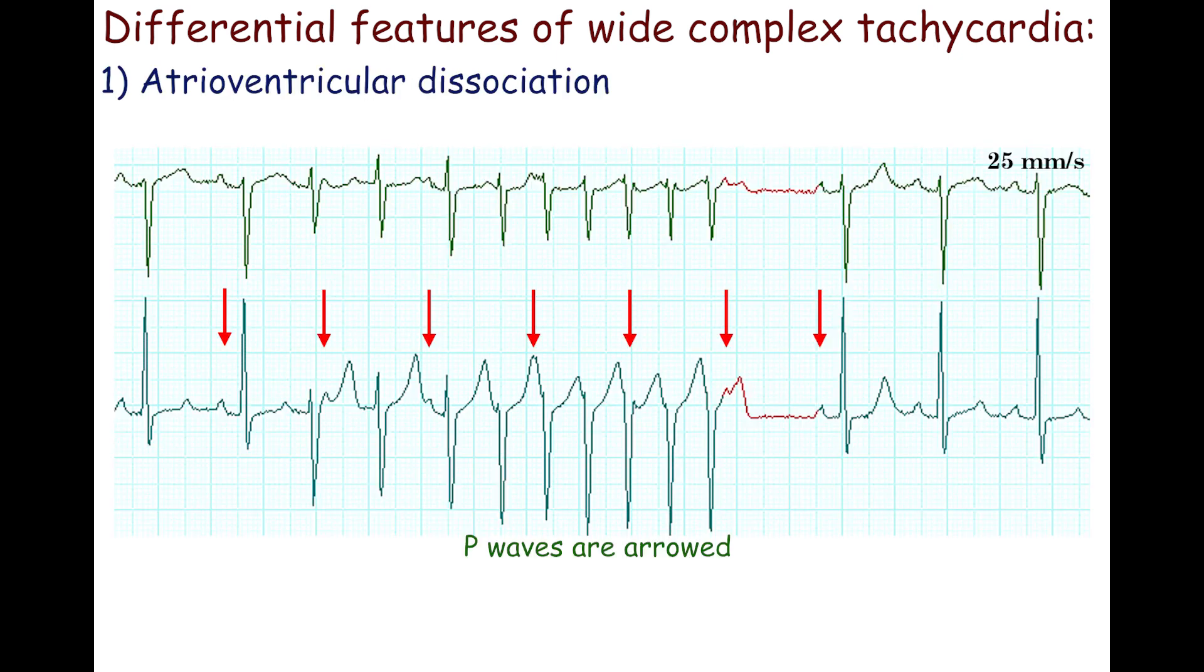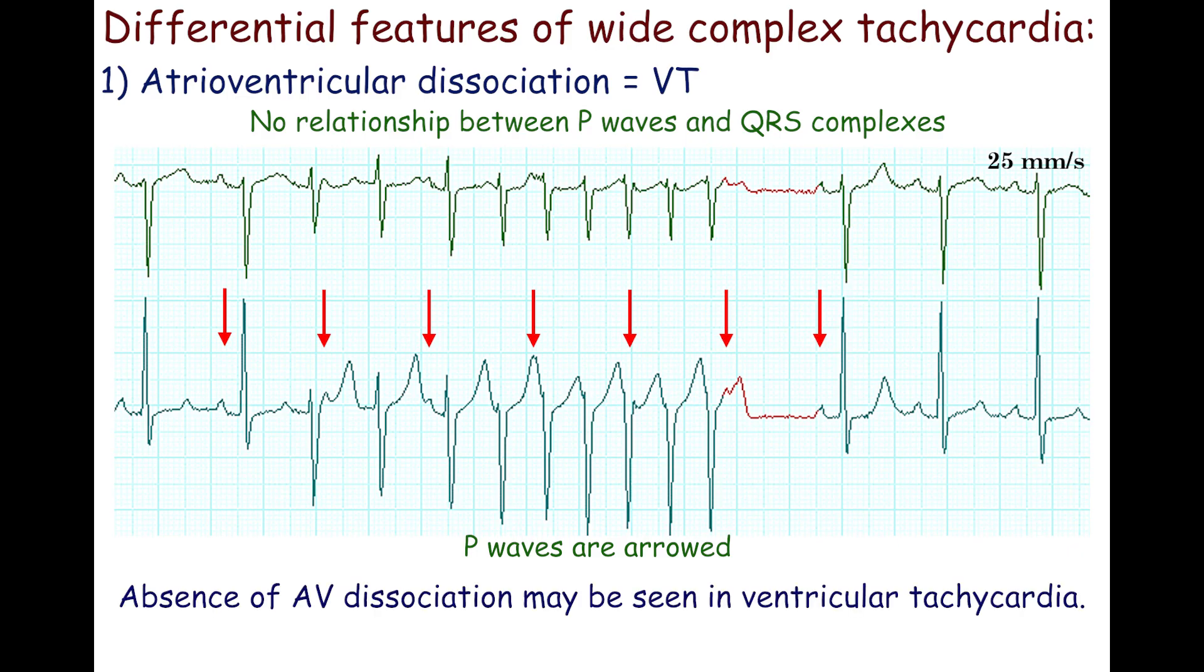The first feature is atrioventricular dissociation. It is the absence of a relationship between P-waves and QRS complexes. This is an exact feature of ventricular tachycardia. P-waves are arrowed. There is no relationship between P-waves and QRS complexes. Pay attention to regular PP intervals. Note that absence of AV dissociation does not mean that it is not ventricular tachycardia.